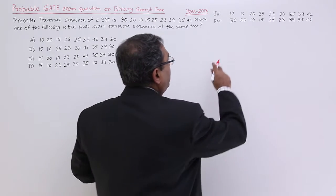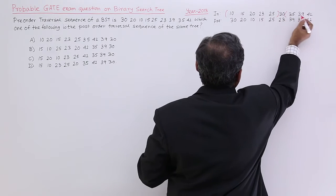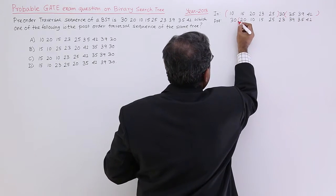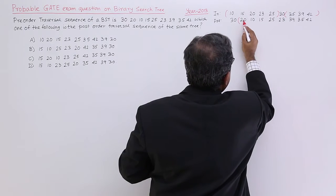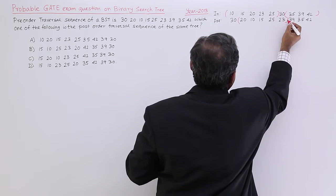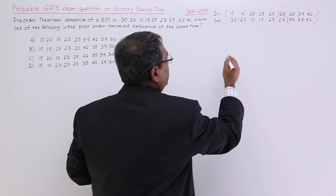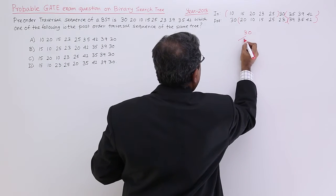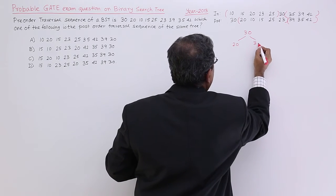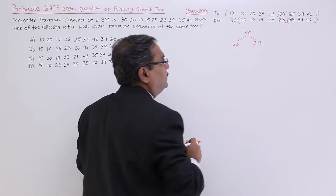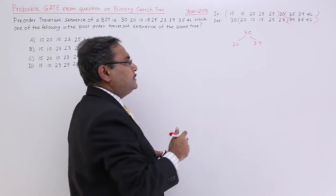Now, pre-order starts with 30 — that is the root — then left subtree and right subtree. So up to elements 1, 2, 3, 4, 5 form part of one subtree, and the rest form the other. From here, going for 30 with two subtrees: pre-order gives 20 for the left and 39 for the right. In this way, if you proceed, the tree will be constructed.